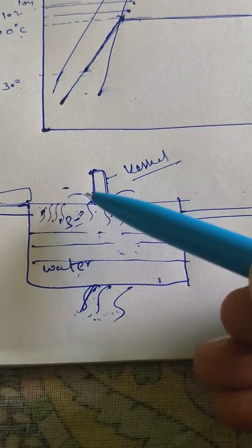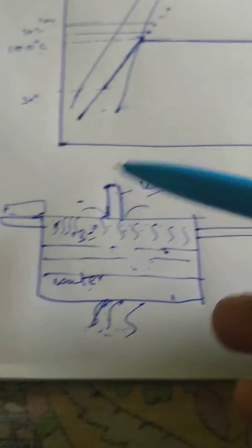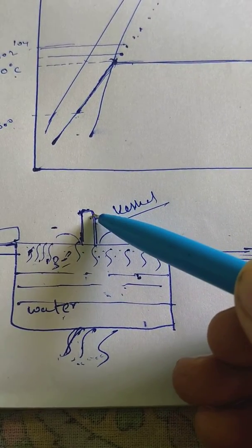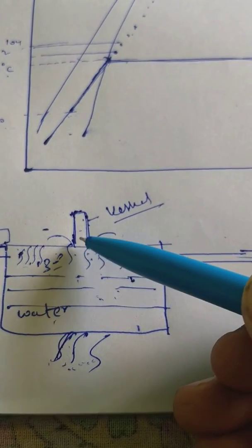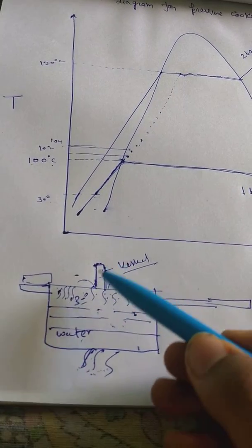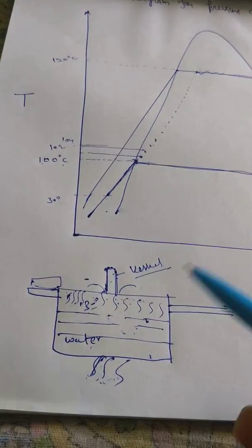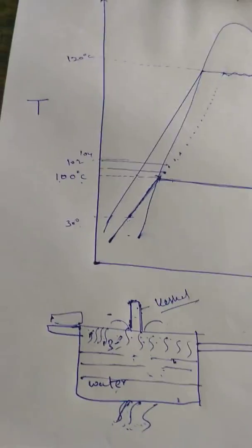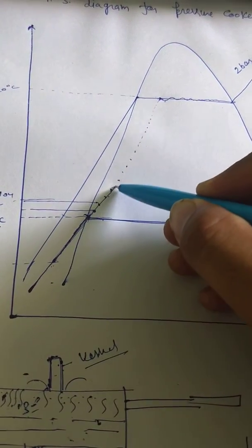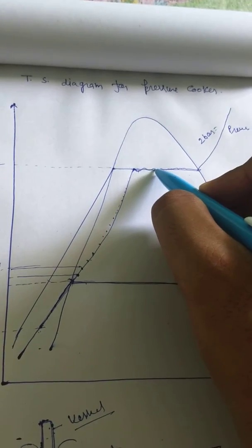The fluctuation continues because the pressure must overcome the weight of the vessel and friction to lift it. Once pressure exceeds 2 bar, the vessel rises, steam comes out, and pressure drops. Then steam formation starts again, pressure builds back to 2 bar, and the vessel rises again. If you join all these points on the TS diagram, you can show the pressure cooker process as a fluctuating line near the 2 bar pressure line.